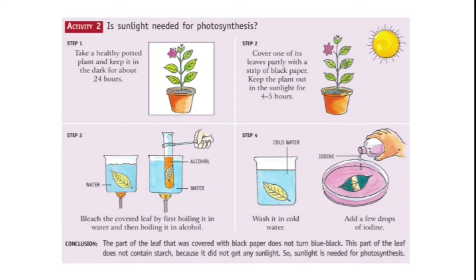For Activity 2, take a healthy potted plant and keep it in the dark for 24 hours. Then cover part of a leaf with a strip of black paper, and keep the plant in sunlight for four to five hours. Then bleach the covered leaf by first boiling it in water, then in alcohol.